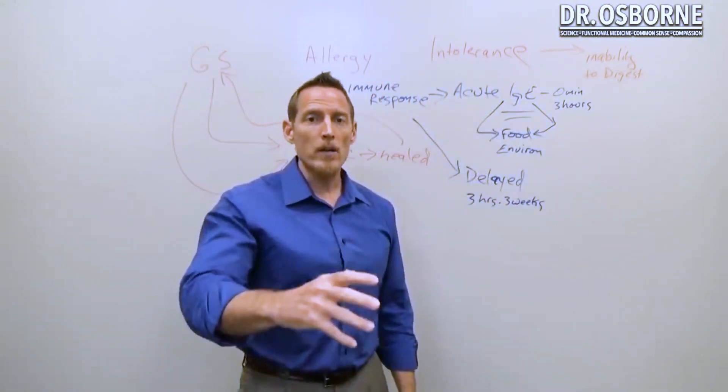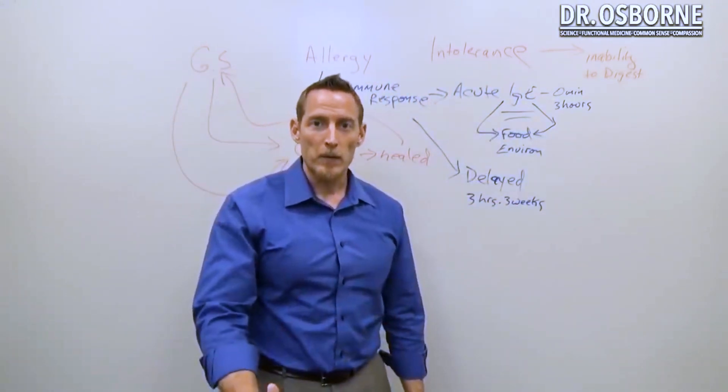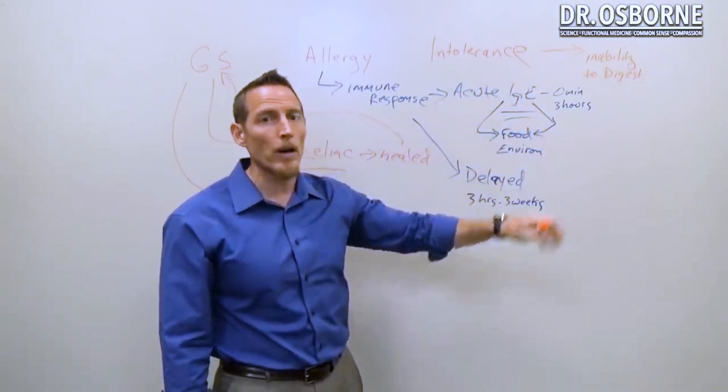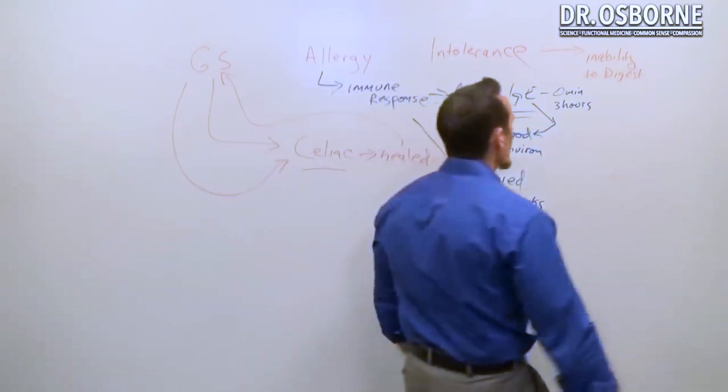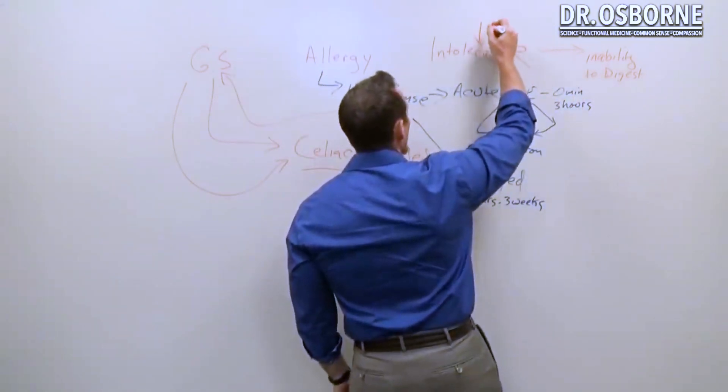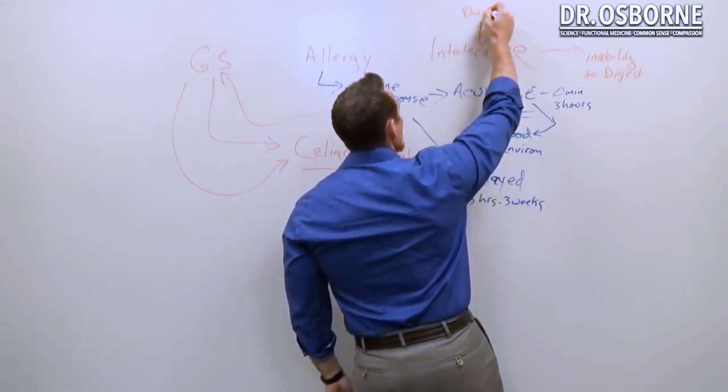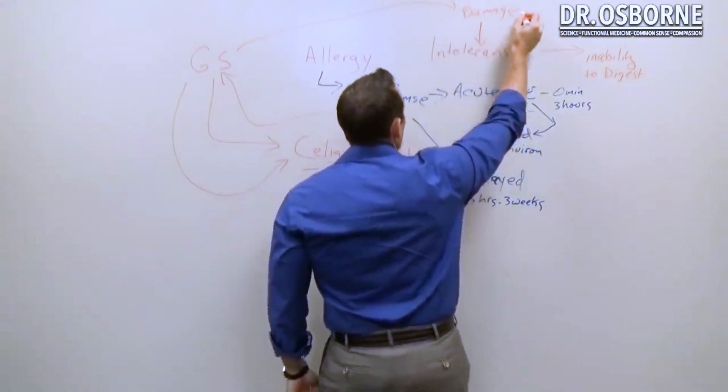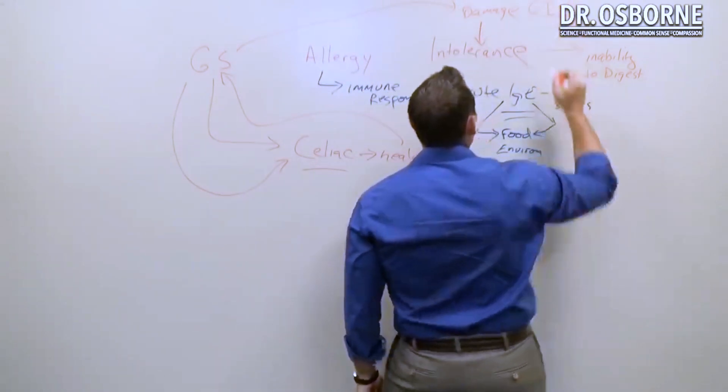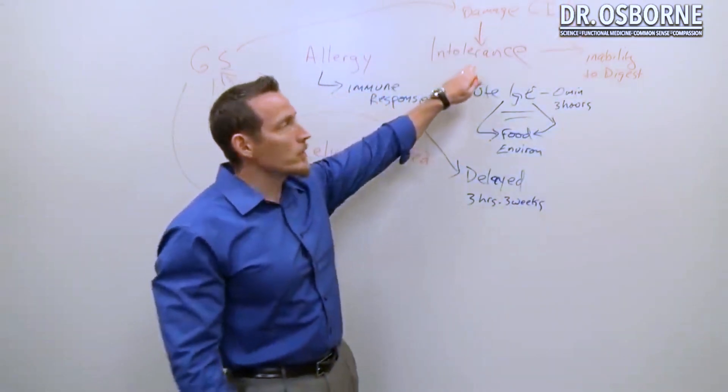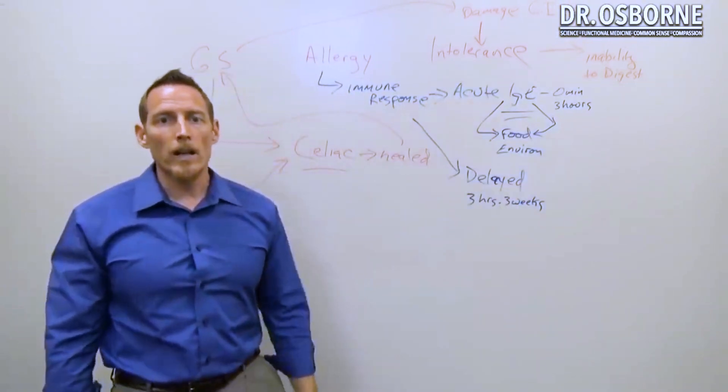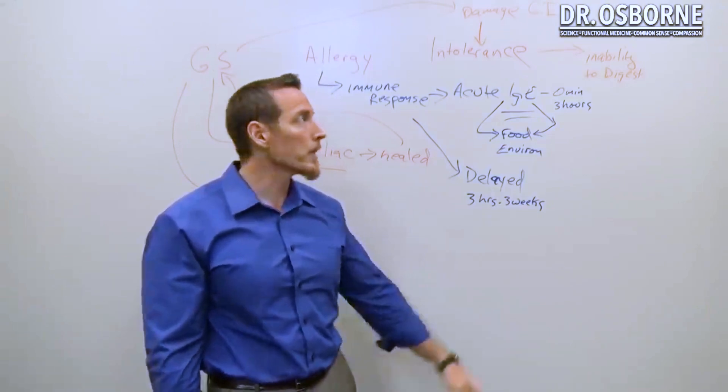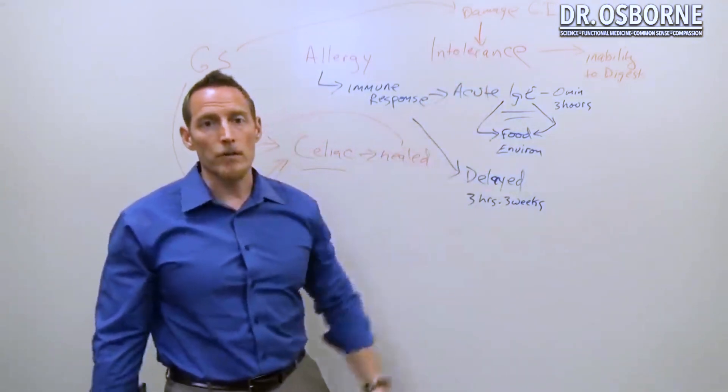Again, the issue here is differentiating whether or not a person just has a temporary intolerance. Intolerances can be temporary because of - in essence, what can cause an intolerance? Damage to the GI tract. So what happens a lot of times is gluten sensitivity damages the GI tract and that leads to the cells in the GI tract not being able to properly produce enough digestive enzymes to be able to break certain foods down. And so a person can become intolerant to a lot of different foods.